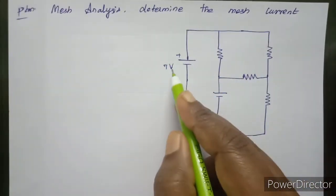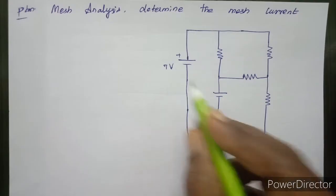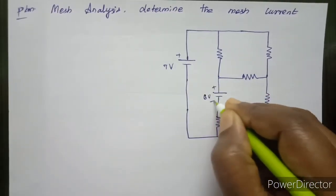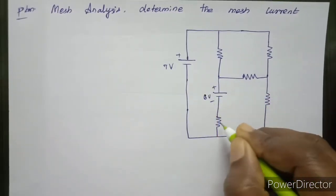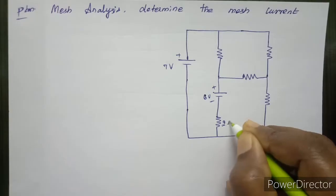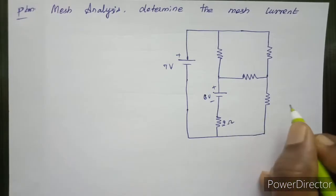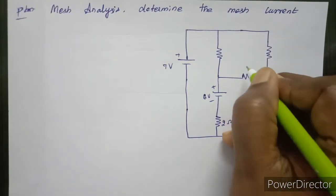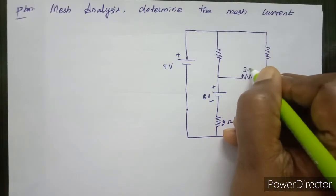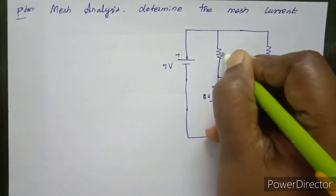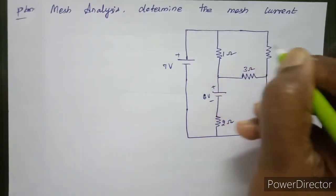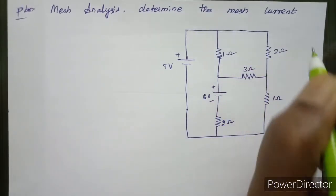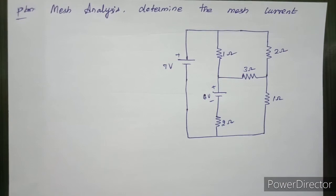There is a 7 volt battery, and here is a 6 volt source. This is a 2 ohm resistor, a 1 ohm resistor, a 3 ohm, 1 ohm, and 2 ohm resistor. So now we have a circuit.